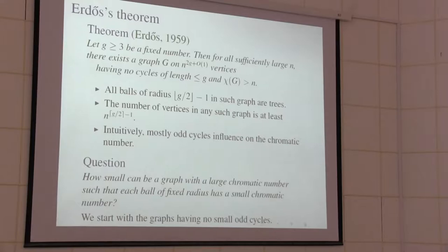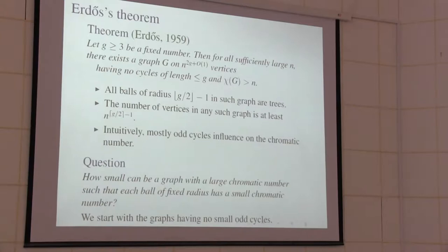There is a famous theorem by Erdős which shows that there are graphs with arbitrarily large girth and arbitrarily large chromatic number. If we ask for the chromatic number to be larger than n and for girth to be larger than g, then we can construct such a graph on roughly n^g vertices.